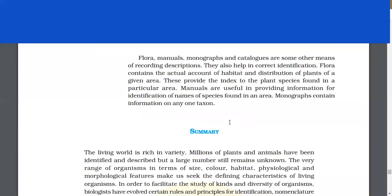Flora, manuals, monographs, and catalogues are some other means of recording descriptions. They also help in correct identification. Flora contains the actual account of habitat and distribution of plants of a given area. These provide the index to the plant species found in a particular area. Manuals are helpful in providing information for identification of names of species found in an area. Monographs contain information on any one taxon.